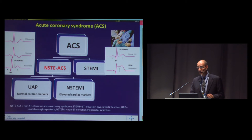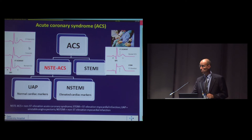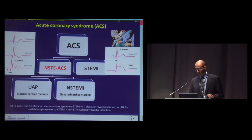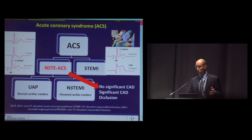On the other hand, NST-ACS patients are a more heterogeneous group and comprise unstable angina pectoris and non-ST elevation myocardial infarction patients. These patients have chest pain, and on the ECG we might see ST depression, T inversion, or no changes at all. In case of normal cardiac markers, the diagnosis is UAP; in case of elevated cardiac markers, the diagnosis is NSTEMI. When we send these patients through coronary angiography within 48 hours, we might find no significant CAD, significant CAD, or coronary artery occlusion.